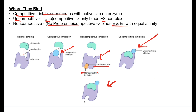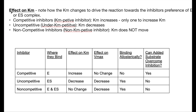This is it binding the enzyme; this is it binding the enzyme-substrate complex. Lastly, you want to think about the effects on KM. For competitive inhibitors, I think 'K-impetitive' — KM increases. For uncompetitive, I think 'under K-impetitive,' meaning my KM actually goes down. And for non-competitive, I think 'non-K-impetitive,' meaning my KM does not move. There is no change.